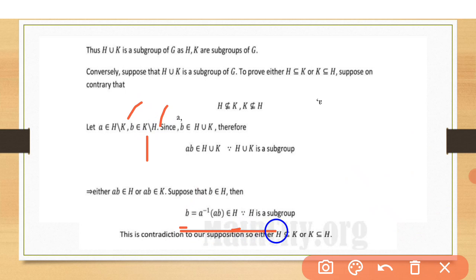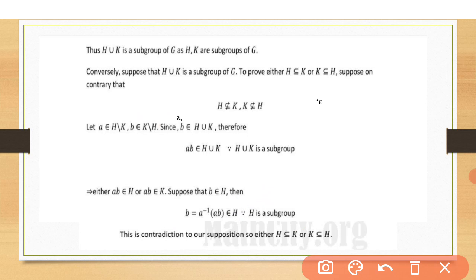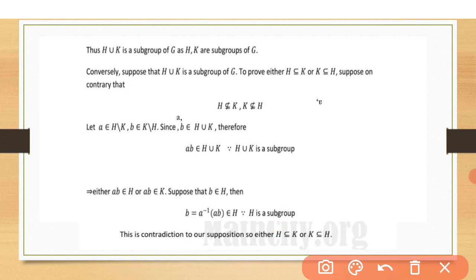But here we proved that B belongs to H, which is a contradiction to our supposition. Therefore, either H is contained in K or K is contained in H. The proof ends here. I hope you understood. Thank you so much.